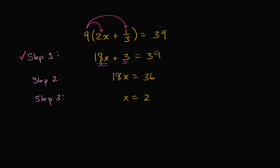Now let's see, what did they do over here? After step 1, you had 18x + 3. And then over here, you only have 18x. So they must have subtracted 3 from the left-hand side to get rid of this 3. Well, if they subtract 3 from the left-hand side, they also need to subtract 3 from the right-hand side. And it looks like they did. 39 - 3 = 36. So that step checks out.